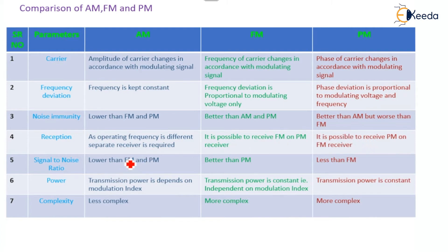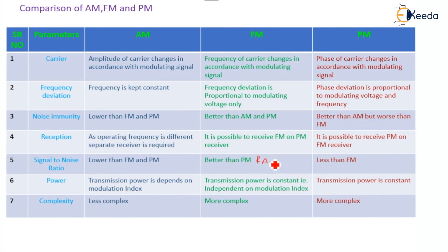Talking about the signal-to-noise ratio: the signal-to-noise ratio of AM is lower than that of FM and PM. In FM, the signal-to-noise ratio is the best. In PM, the signal-to-noise ratio is less than that of FM, but better than AM.